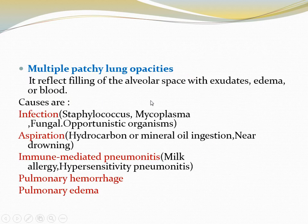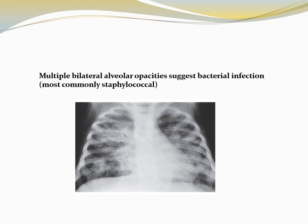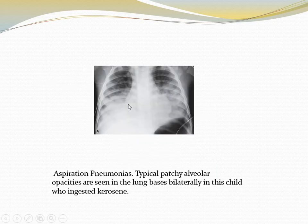Multiple patchy lung opacities reflect filling of the alveolar space with exudates, edema, or blood, caused by infection or aspiration, immune-mediated pneumonitis, pulmonary hemorrhage, or pulmonary edema. Multiple bilateral alveolar opacities suggest bacterial infection, most commonly staphylococcal. Another case shows multiple bilateral opacities more basally located in a child who ingested kerosene, so it is a case of aspiration pneumonia.